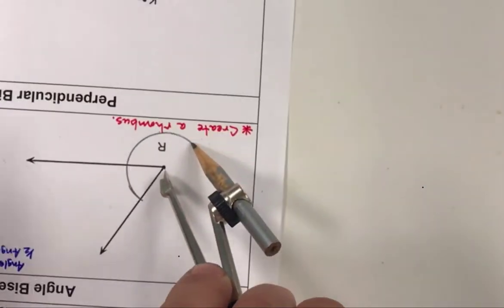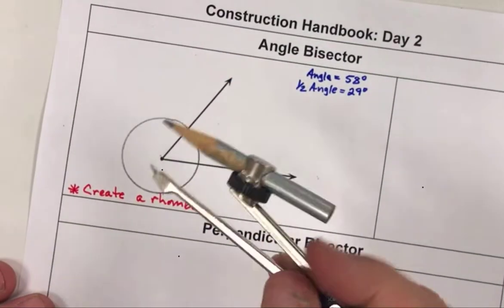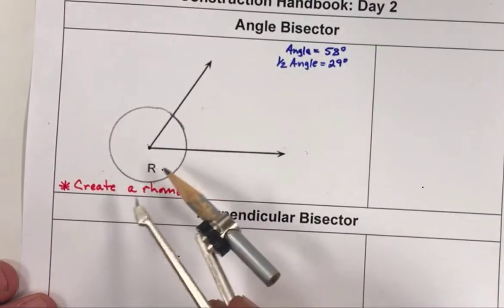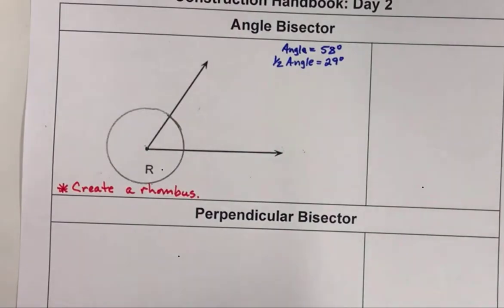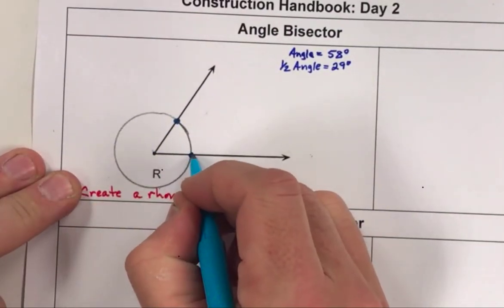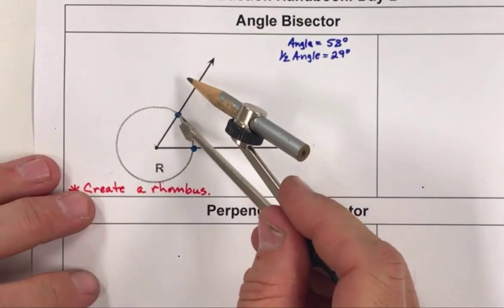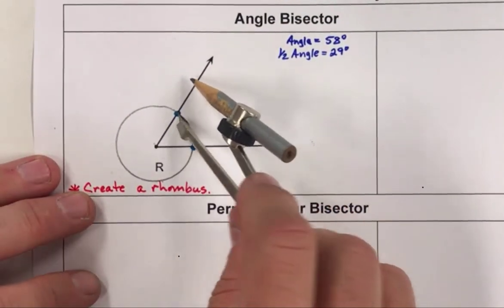It's going to probably work best if you just spin your paper, but do it however you wish, and create one circle. Now, where that circle meets the two rays, there's going to be two new points. Those are going to be the new centers of our next two circles we're going to draw.